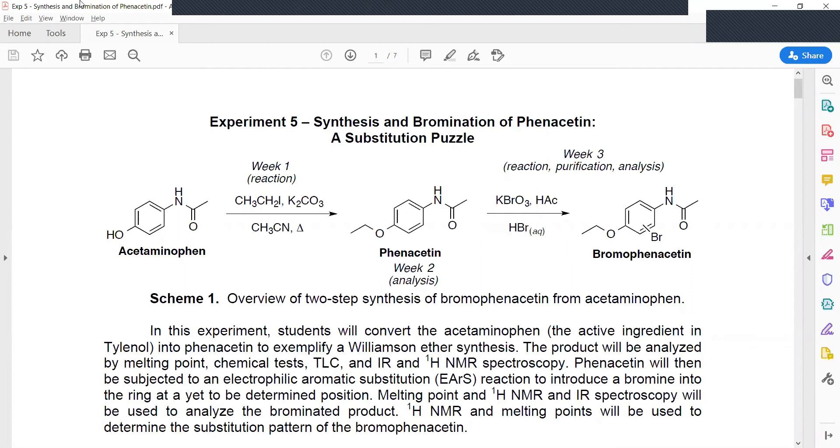Welcome to Organic Chemistry 110L. This is Experiment 5, Synthesis and Bromination of Phenacetin, a Substitution Puzzle. This week, we're going to be making Phenacetin from acetaminophen via a Williamson ether synthesis using ethyl iodide, potassium carbonate, and acetonitrile.